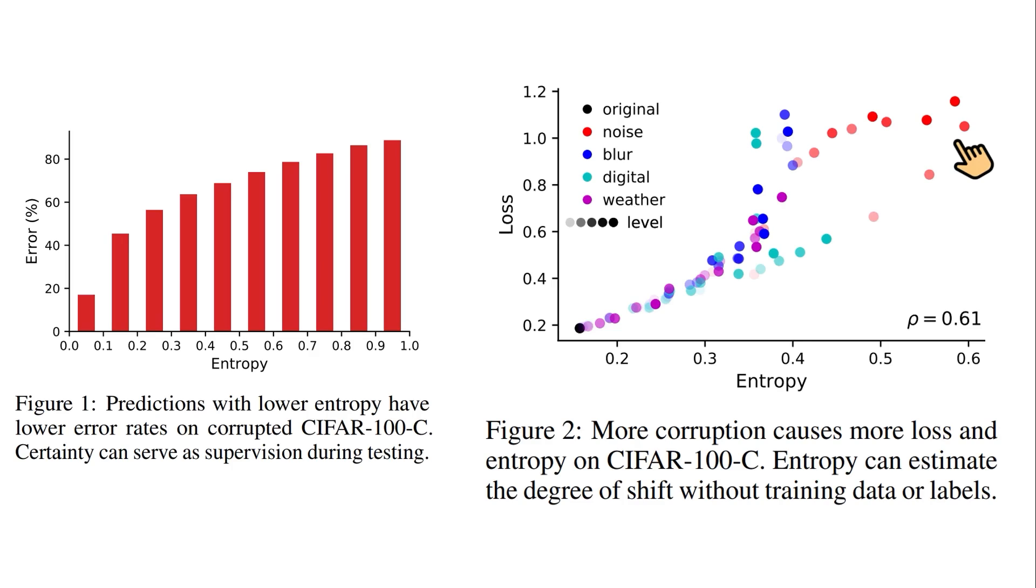So here comes the idea. Why not just reduce the entropy at the test time so as to decrease the error rate and the loss value? Seems easy, right?